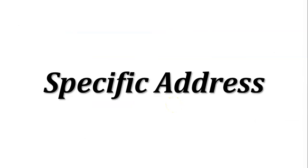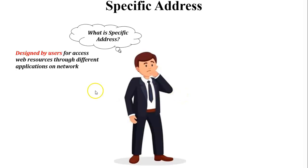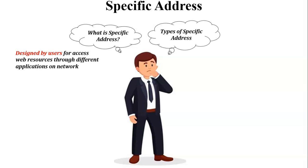The last address type is the specific address. What is a specific address? A specific address is designed by users to access web resources through different applications on the network. Using the specific address, we can access multimedia files and document files on the internet. There are two types of specific address: the first one is URL, and the second one is email address.